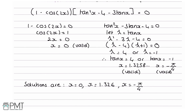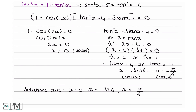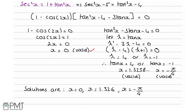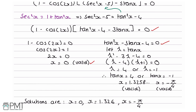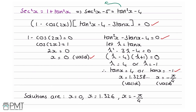This question is worth six marks. Your first mark comes from getting x equals 0. Your second mark comes from using sec²x equals 1 plus tan²x and obtaining (1 minus cos2x)(tan²x minus 4 minus 3 tanx) equals 0. Your third mark comes from recognising the quadratic factor. Your fourth mark comes from factorising correctly to get tanx equals 4 and minus 1. Your fifth and sixth marks come from the final two correct solutions: 1.326 and minus π/4.